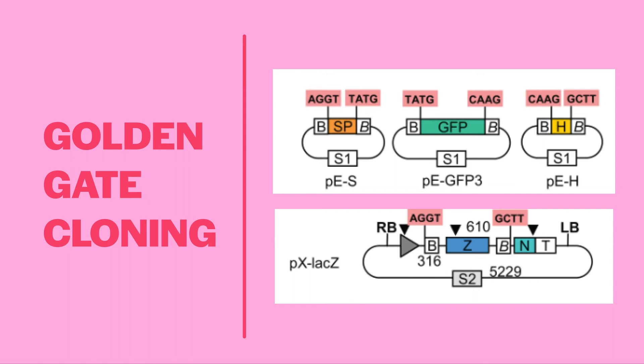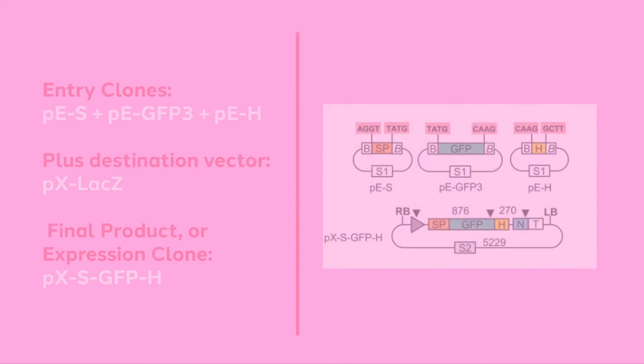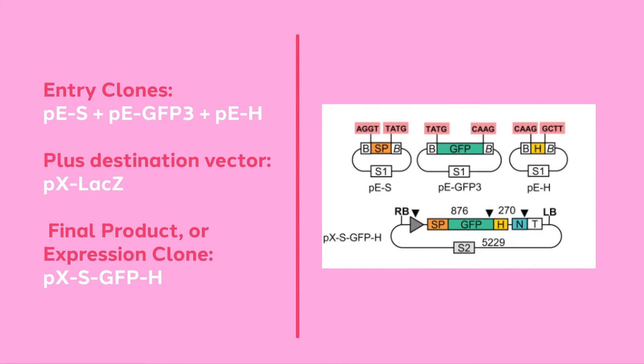The final BSA1 engineered overhangs required to form an intact circular plasmid are found in the destination vector PX-lacZ. Ligation results in the fragments being introduced in a predetermined order in the destination vector. If necessary, take a minute to go back and match the various overhangs so that you can see how they result in the finished product, our expression clone PXSGFPH.